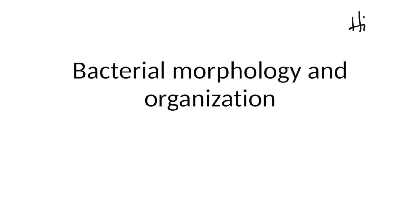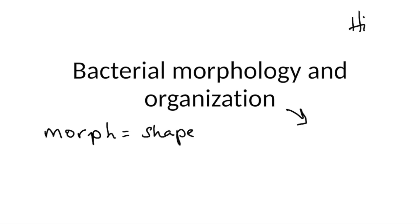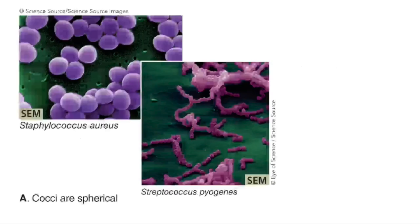In this video we're going to talk about bacterial morphology and organization. Remember the root 'morph' means shape, so we're talking about the shape of individual bacteria. Organization means what sort of groups those bacteria grow in — what we see under a microscope.